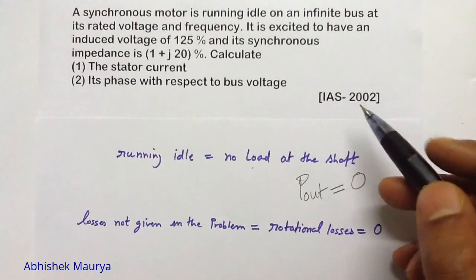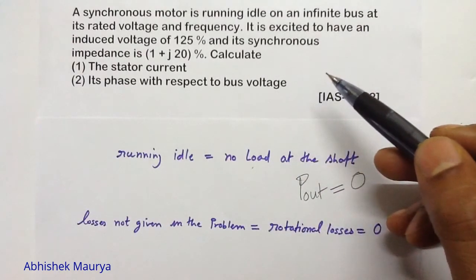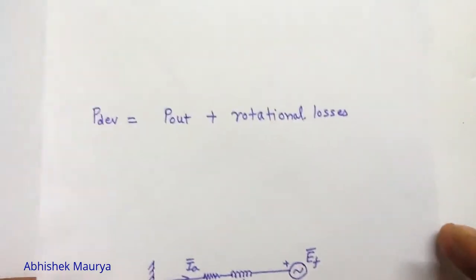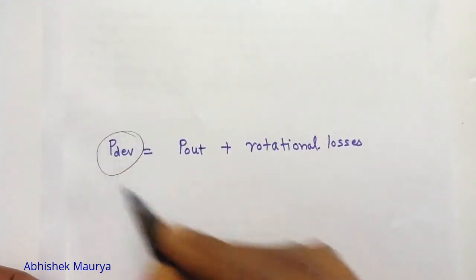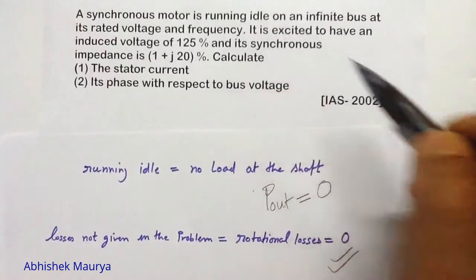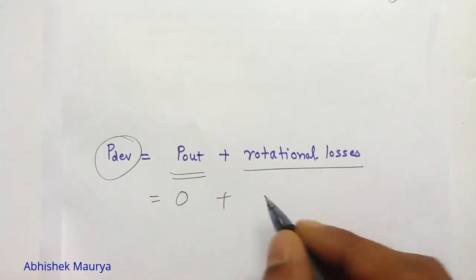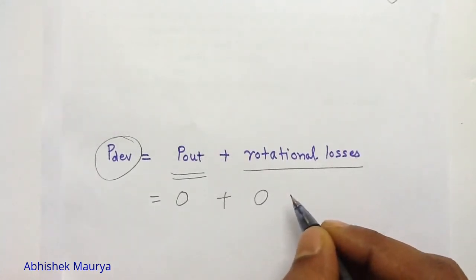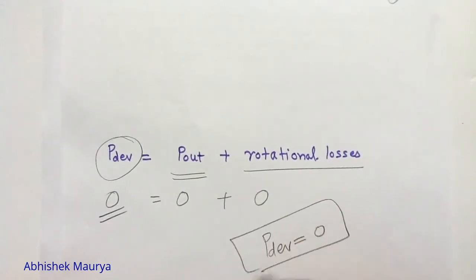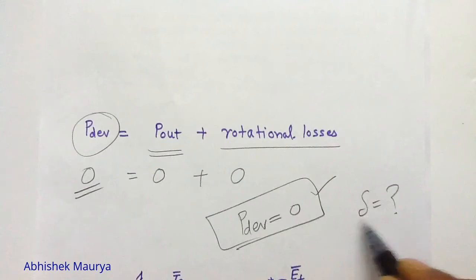The rotational losses are not given in the problem, so we can assume rotational losses to be 0. In the case of a synchronous motor, power developed equals power output plus rotational losses. Because the motor is running idle, power output is 0, and since losses are not specified, rotational losses are also 0. Therefore, the power developed equals 0. This is the real power developed, and we will use this information to calculate the value of delta.